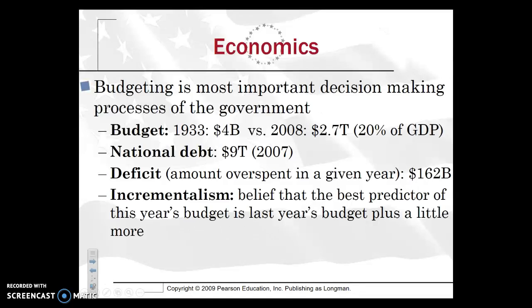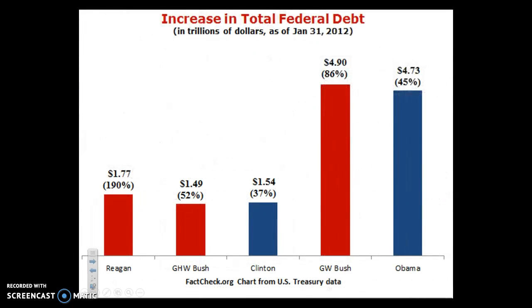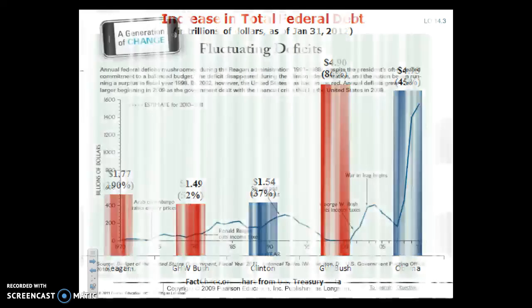A good predictor of next year's budget is going to be taking last year's budget and then just adding a little bit more, because really the budget has increased steadily over time. If you look at the increase in total federal debt by president, you've seen that really since George W. Bush and Obama, they have significantly increased the total federal debt, according to this chart.